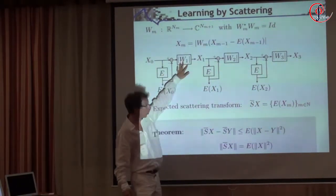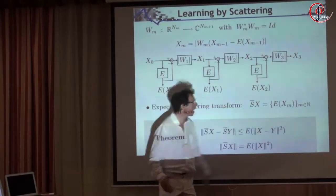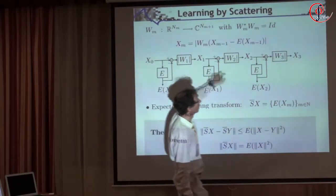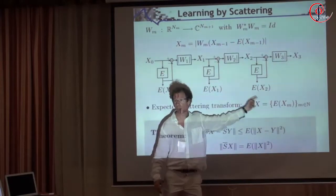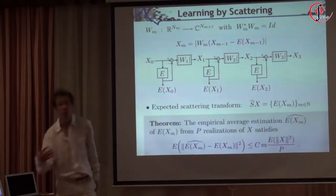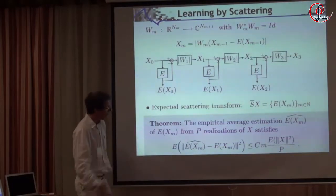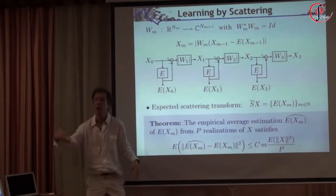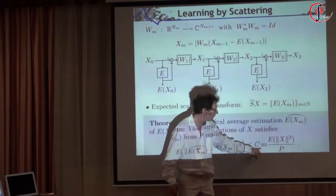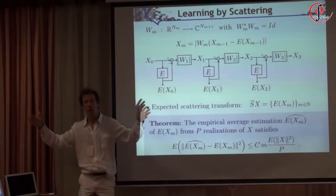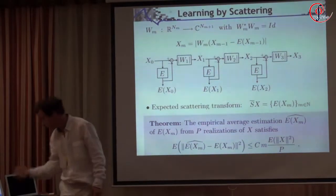Because you have unitary and contractive operators, you can show that this representation — whatever W you choose — is going to be contracted. Because of the property of the modulus being sufficiently contractive, the energy of each layer goes to zero, and ultimately you get conservation of energy. The other thing is that this is globally contracted, so you get very good estimators: if you have p examples and estimate the expected value by averaging the output over p realizations, you get an error of order one over p, which increases linearly with m. But if p is of the order of 1000, you don't go anywhere close to 1000, so you get something very stable because you just do contractive operators.